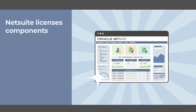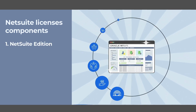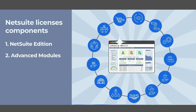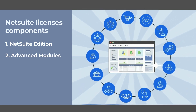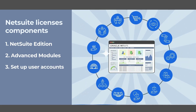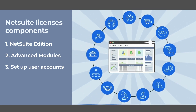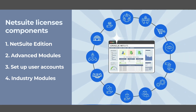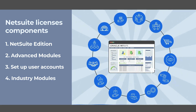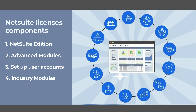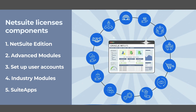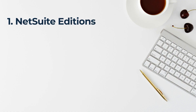The first step is to select the suitable NetSuite edition according to your company size. In the second step you can select advanced modules to go beyond basic edition functionality. Third, determine the number of users that will use the system, whether they have full or limited access. Fourth, acquire industry-specific modules like manufacturing, project management, and many others. In the last step, you can extend NetSuite functionality by deploying external solutions and integrations from the SuiteApp marketplace.